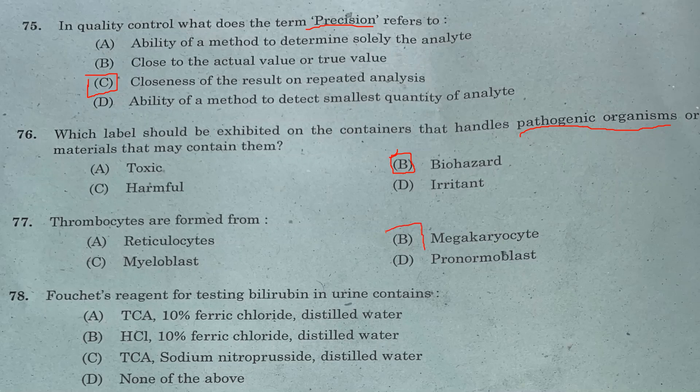Question 77: Thrombocytes are formed from — Option A: reticulocytes. Option B: megakaryocytes. Option C: myeloblast. Option D: pronormoblast. Answer is Option B, megakaryocyte.